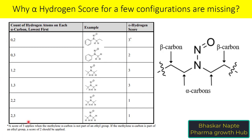A total of six configurations are provided in the guideline. Now, how do we define the alpha hydrogen score? To understand a configuration like 0,2, you need to understand what is meant by alpha hydrogen. Look at the structure of a nitrosamine: the carbon connected to the nitrogen of the nitroso group is your alpha carbon. The number of hydrogen atoms present on the alpha carbon defines the configuration.